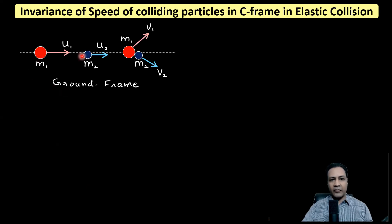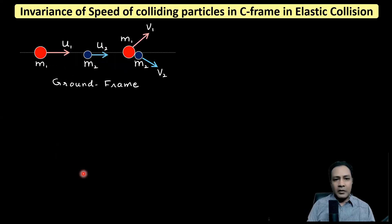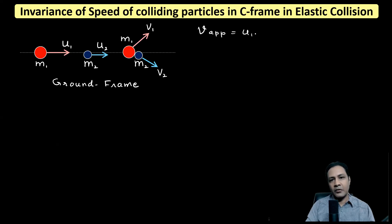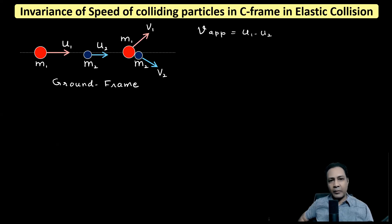Suppose we have two particles m1 and m2 as you can see — this picture is in the ground frame. The particle of mass m1 is moving with velocity u1 and the particle of mass m2 is moving with velocity u2. They have a velocity of approach u1 minus u2. One important thing is that relative velocity is the same in all frames, so even from the C frame the velocity of approach and velocity of separation will remain the same.